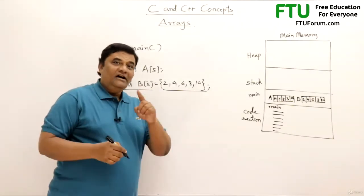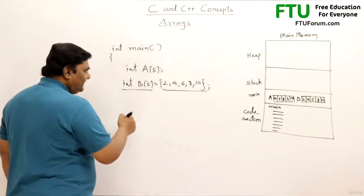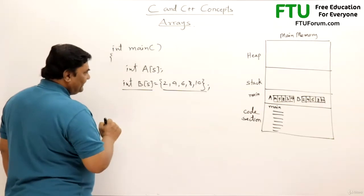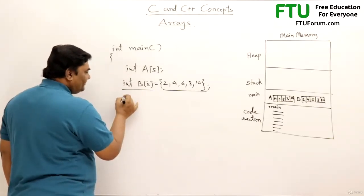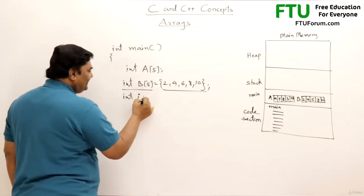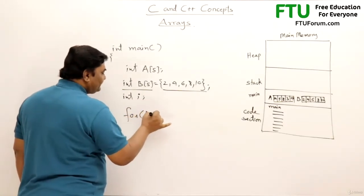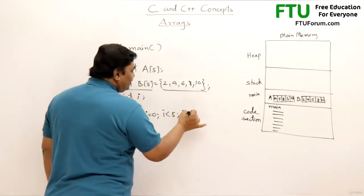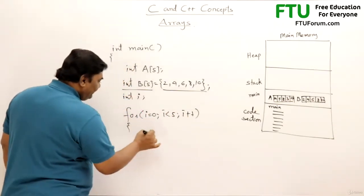Now next thing is how to access an array. For accessing an array we can access all the elements one by one. Suppose I want to print all of them, then I can use a for loop. So for that I will take one variable i, and using for loop, for int i = 0, i < 5, i++, then using printf I can print it. So printf percent d, I can say B[i].